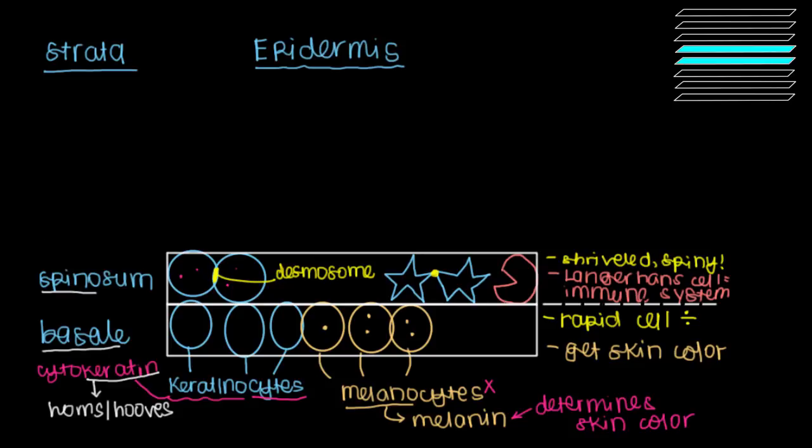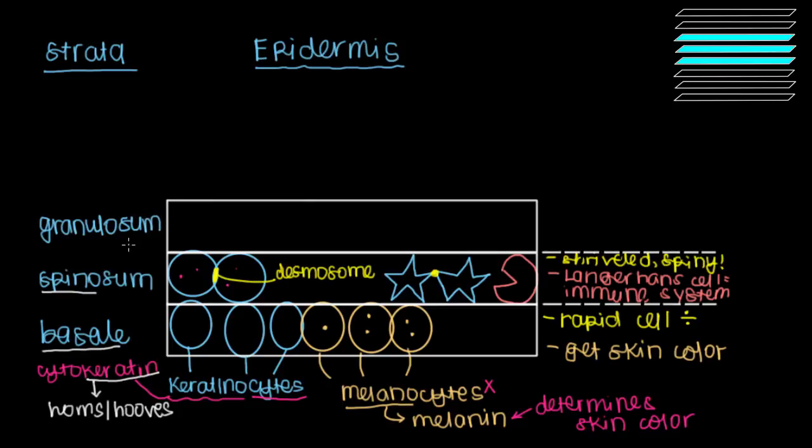And so it's onward and upward to our next layer that's here. This more superficial layer is called the stratum granulosum. The stratum granulosum. Which just means the granular layer.